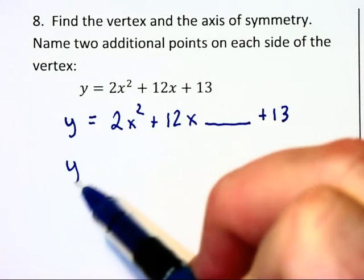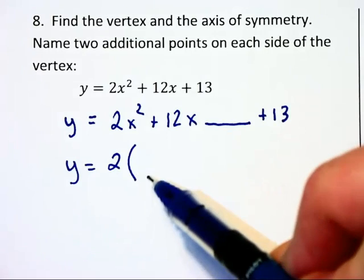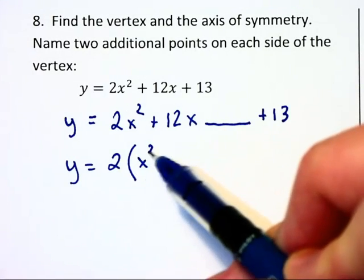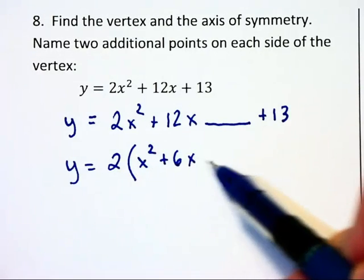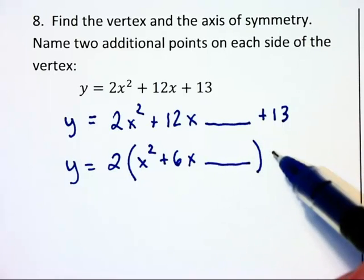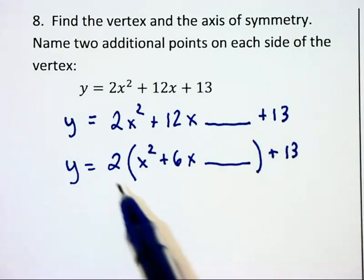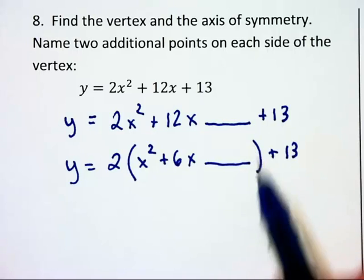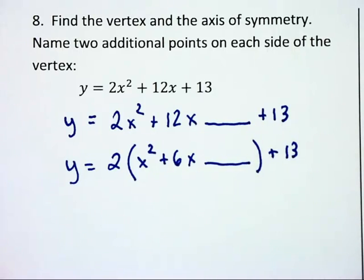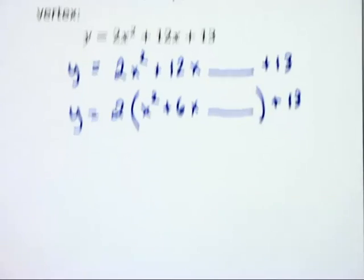Then what I need to do is I need to factor out that leading coefficient, which gives me x squared plus 6x blank, close parentheses, then plus 13. Factoring out that 2 cannot reach over the 13 because I've closed off the parentheses. Now we've got a couple things to watch out for.